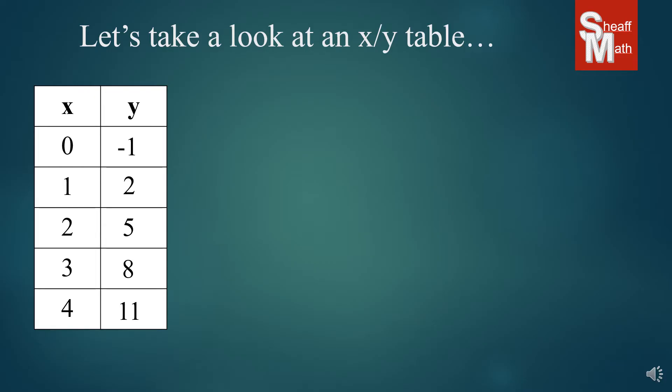And the y's have a certain rate that they're going by. So what we're going to do is start with the generic form of the slope intercept equation: y equals mx plus b. The m is the slope and the b is the y-intercept. So if we can find the slope and the y-intercept, then we're able to create that equation.